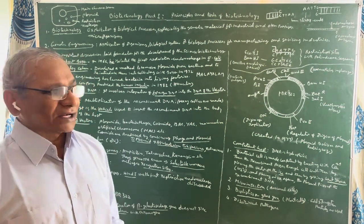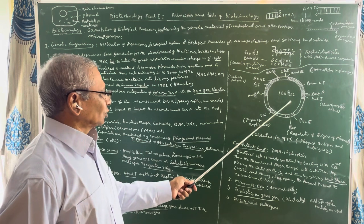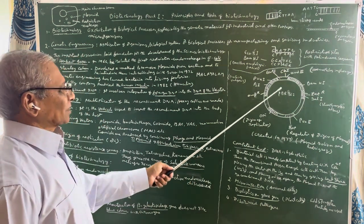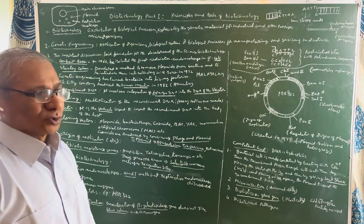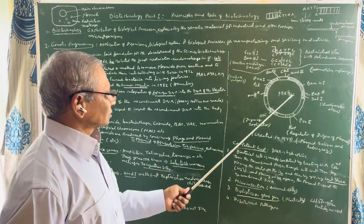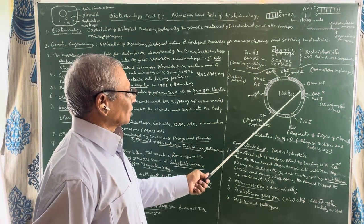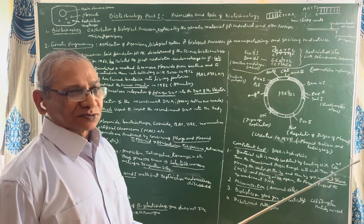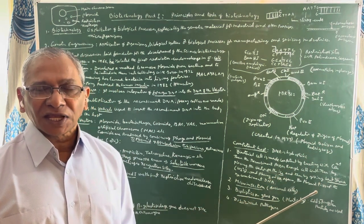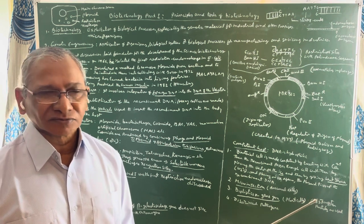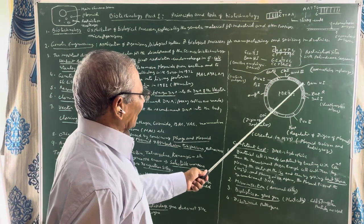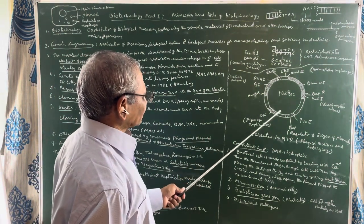When we incorporate foreign DNA into a plasmid, a transformation has taken place — we call it a transformed plasmid. This is consistent with the experiments of Griffith that we have studied. If we introduce a foreign DNA into a plasmid, we call that plasmid a transformed plasmid.